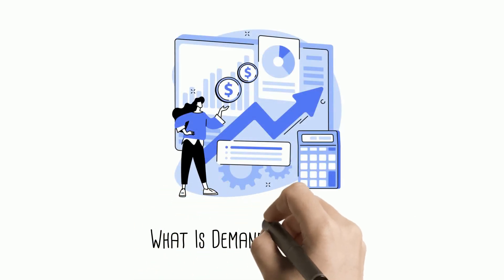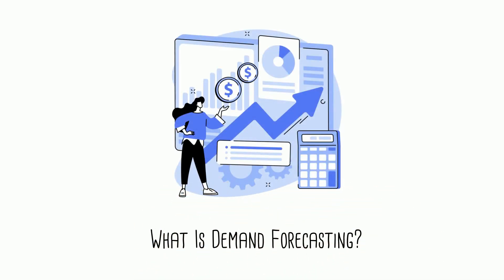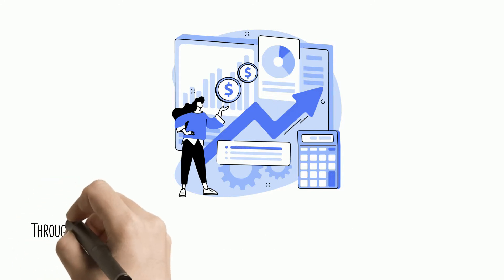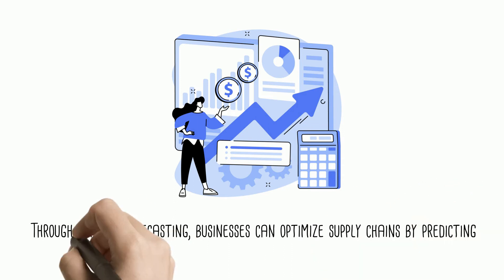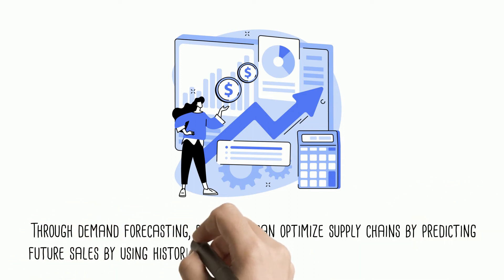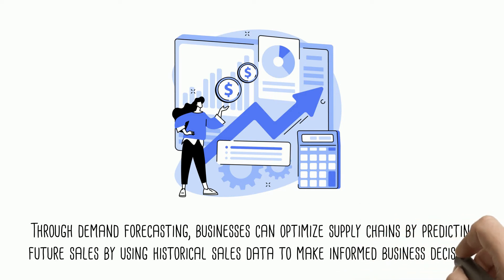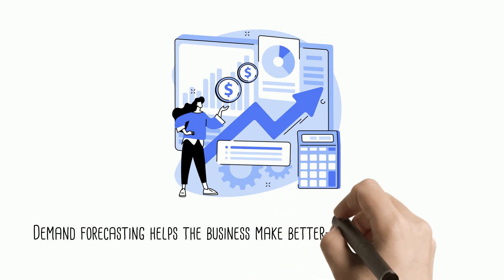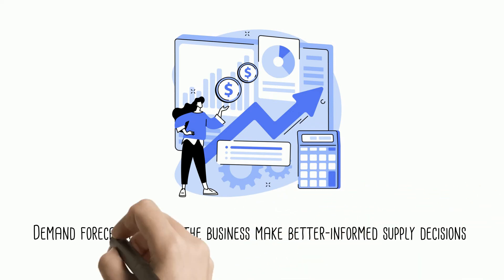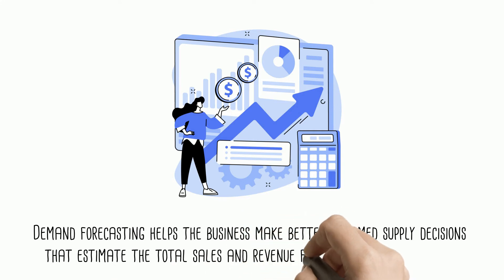What is demand forecasting? Demand forecasting uses predictive analysis to understand and predict customers' demand for a product or service over a period of time. Through demand forecasting, businesses can optimize supply chains by predicting future sales using historical sales data to make informed business decisions about everything from inventory planning and warehousing needs to running flash sales and meeting customer expectations. Demand forecasting helps the business make better informed supply decisions that estimate the total sales and revenue for a period of time.